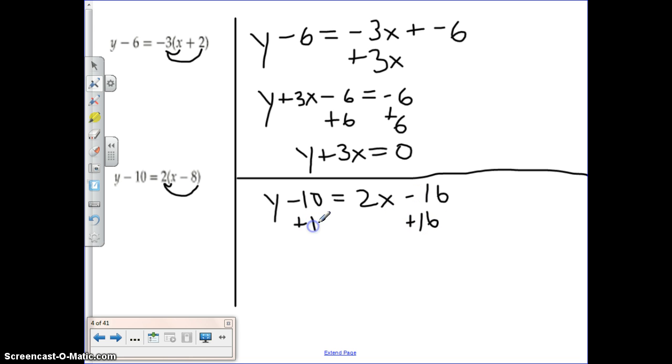So I want to add 16 to both sides. So now I have y, let's see, negative 10 plus 16 is a positive 6, is equal to 2x. And it looks like I'm almost there.